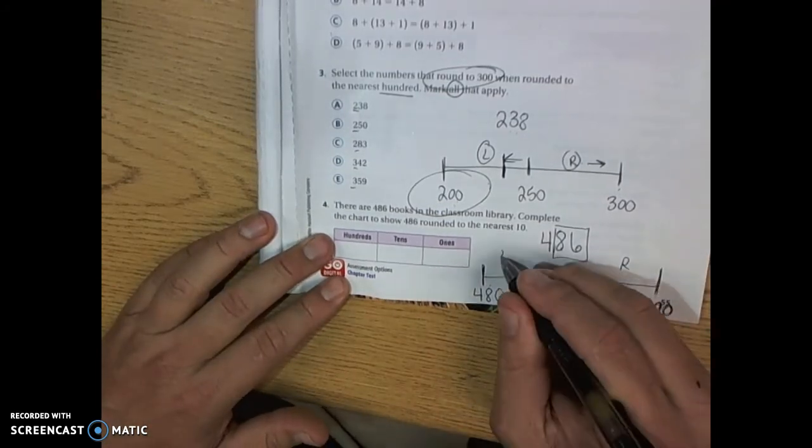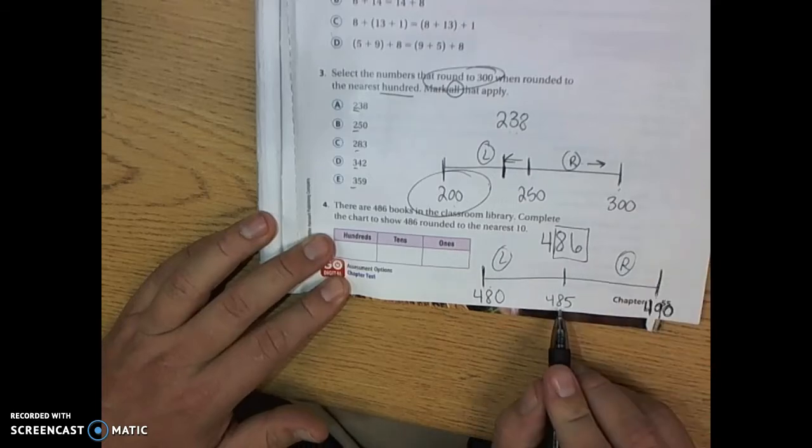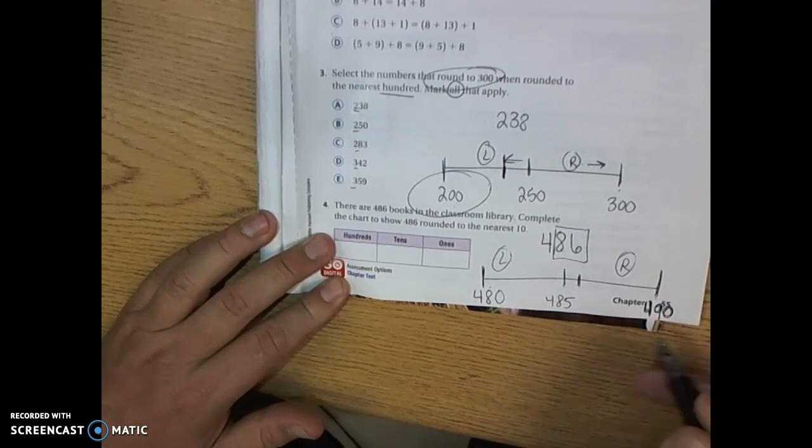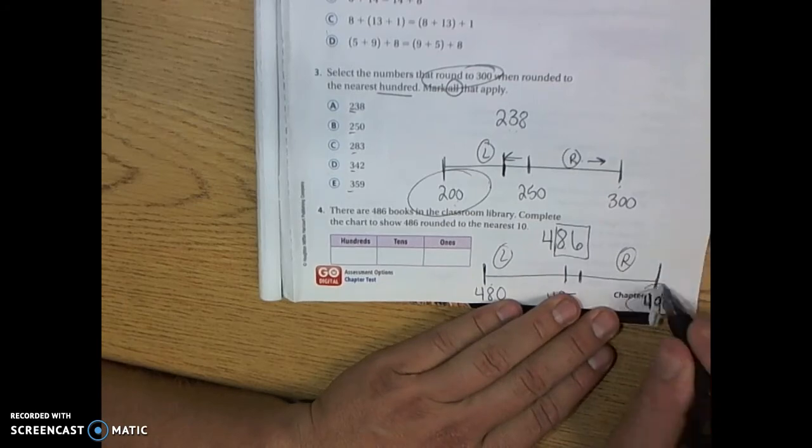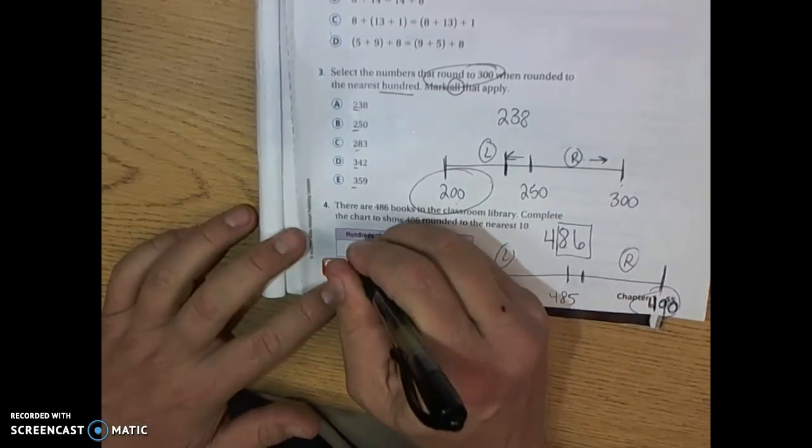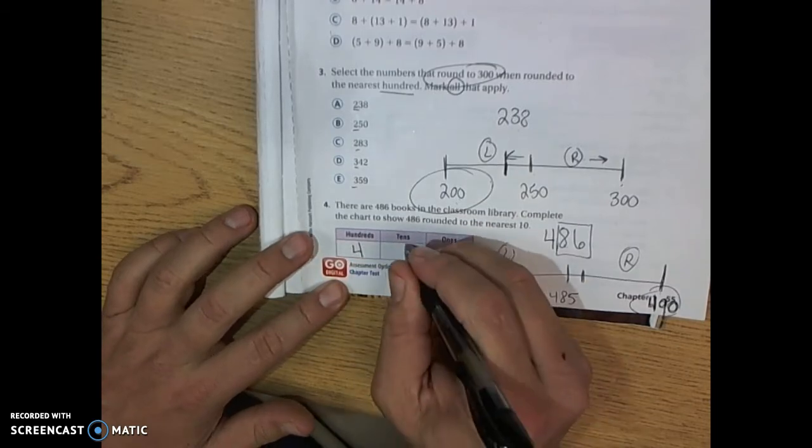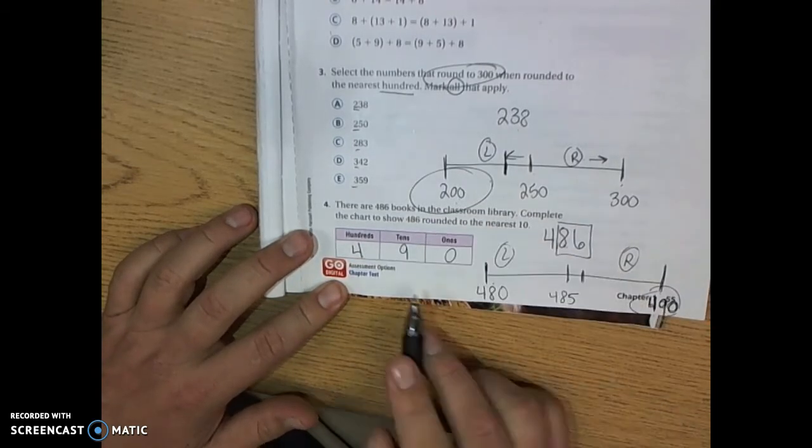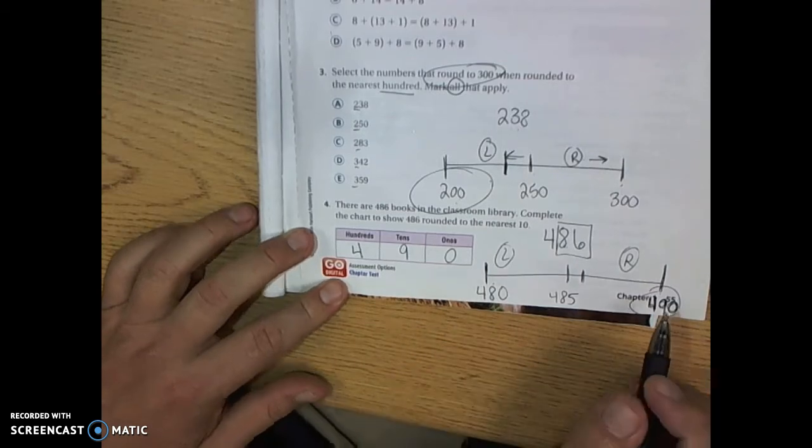Is 486 to the right or to the left of 485? 486 is to the right of 485. So the final answer is going to be 490. So there's going to be 4 hundreds, 9 tens, and 0 ones when rounded to the nearest 10.